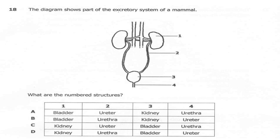Question 18. The diagram shows part of the excretory system of a mammal. What are the number three structures? A: 1 bladder, 2 ureter, 3 kidney, 4 urethra. B: 1 bladder, 2 urethra, 3 kidney, 4 ureter. C: 1 kidney, 2 ureter, 3 bladder, 4 urethra. D: 1 kidney, 2 urethra, 4 ureter. The correct answer here is C: 1 kidney, 2 ureter, 3 bladder, 4 urethra.